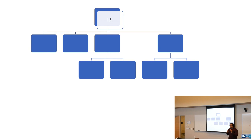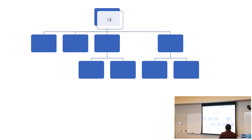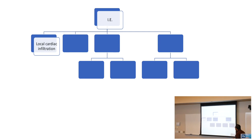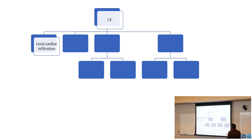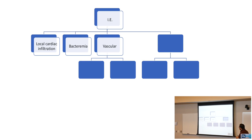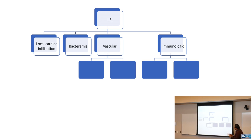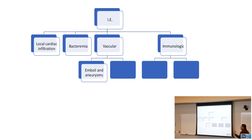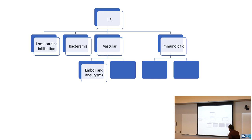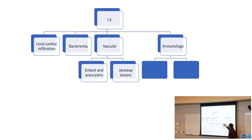The USMLE wants you to know the vascular and embolic phenomena of infective endocarditis. Infective endocarditis can be due to local cardiac infiltration, bacteremia, vascular phenomena, or immunological phenomena. Vascular phenomena include emboli, aneurysms, and Janeway lesions — Janeway lesions being the key buzzword for vascular phenomena.